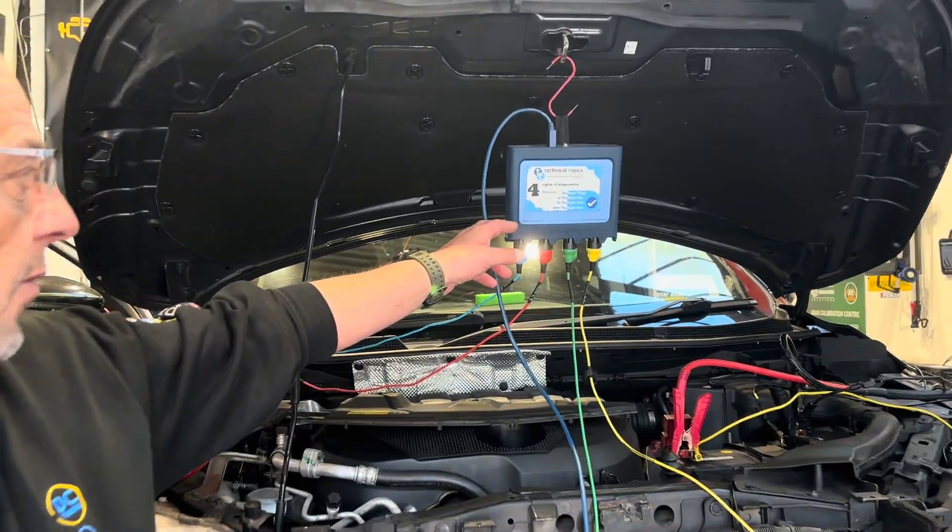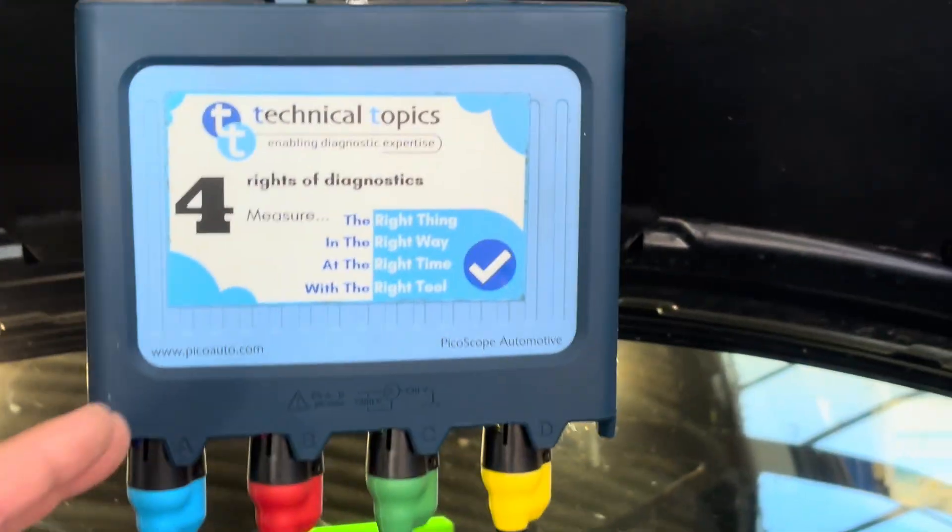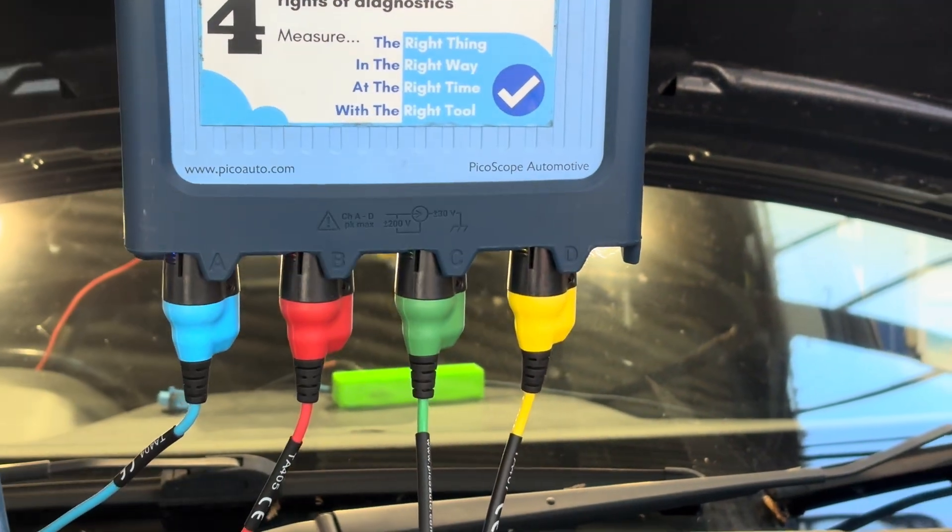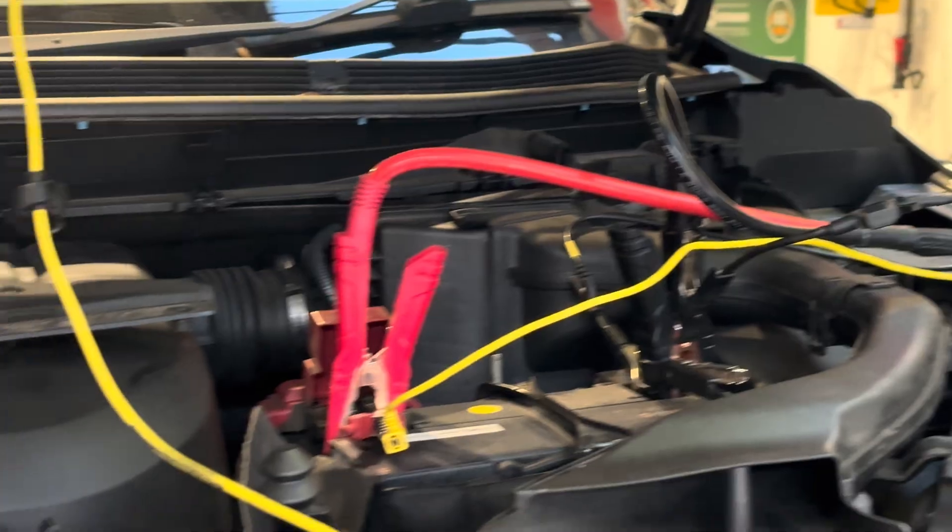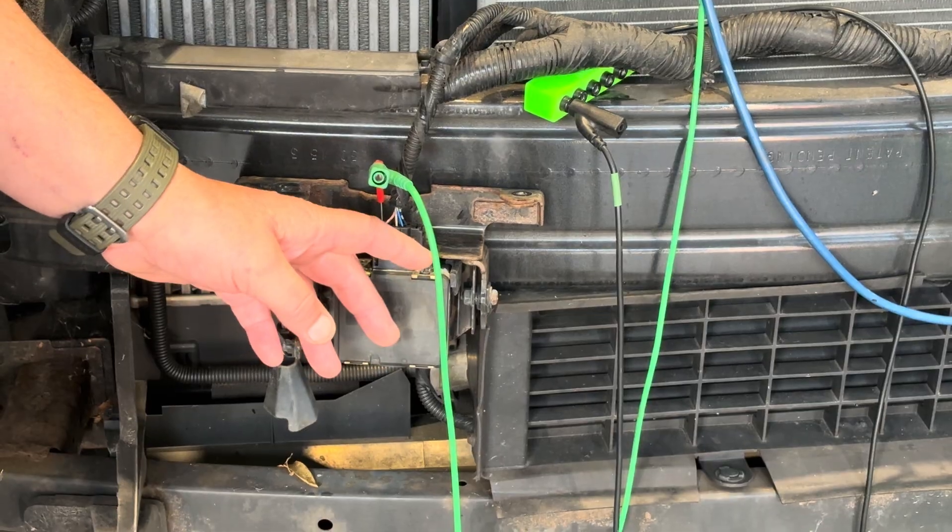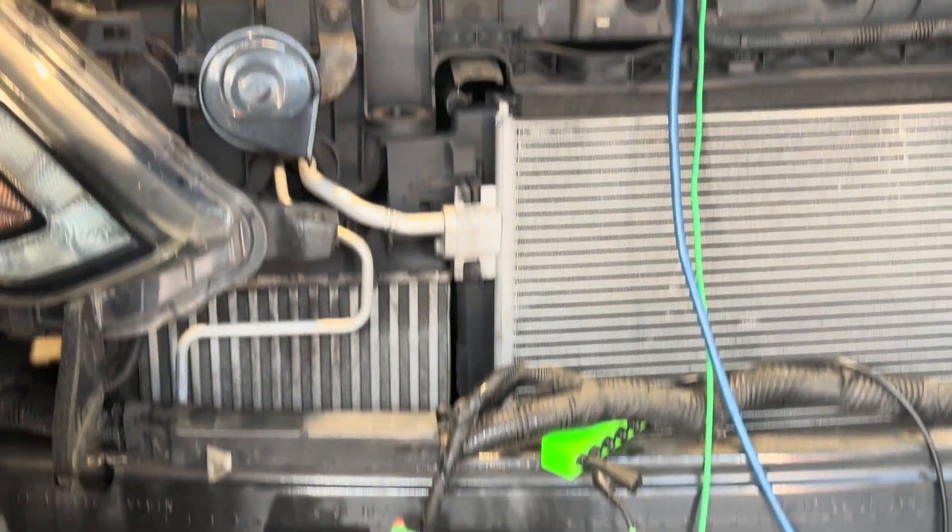This is the Pico 4425A with the smart BNCs, got four channels connected. We've got the yellow channel going to battery, we have the green channel going down to the radar. Don't worry about the radar hanging down because it's going to have to go for calibration later anyway. So monitoring the live feed into the radar unit, battery voltage, and then if we walk around here.